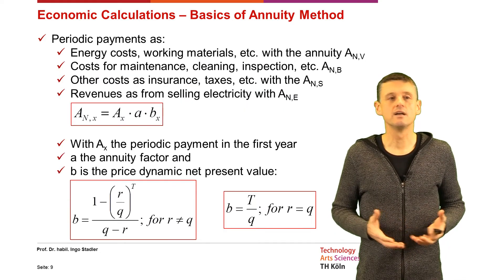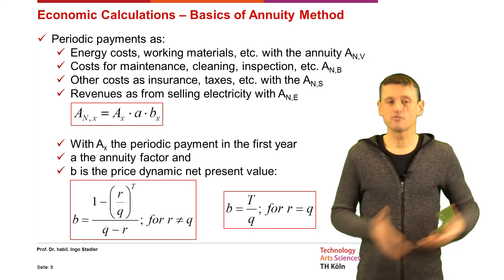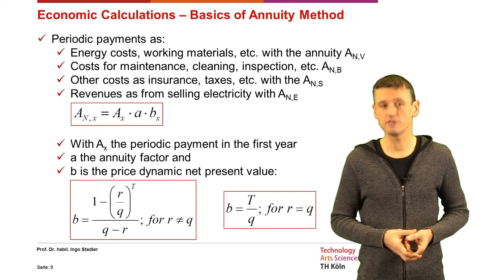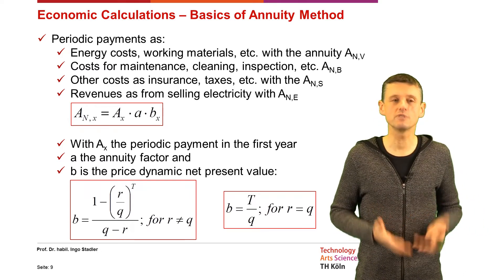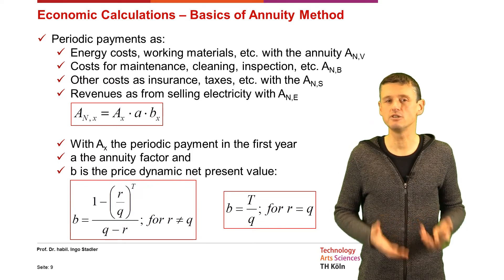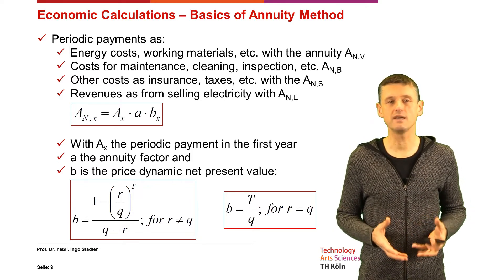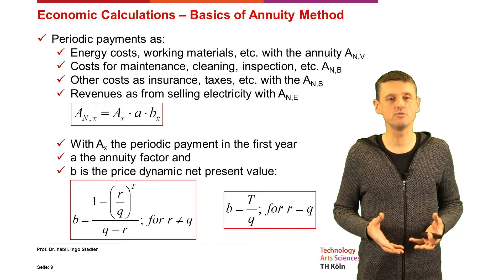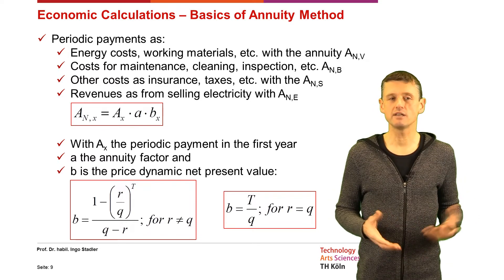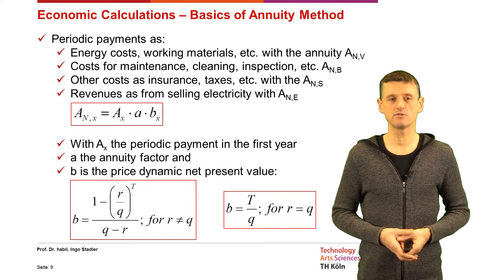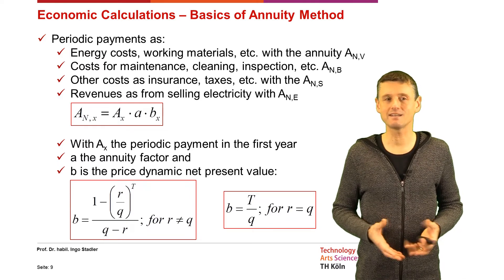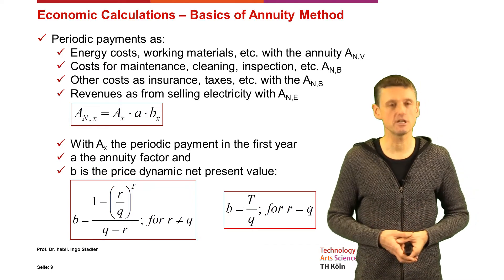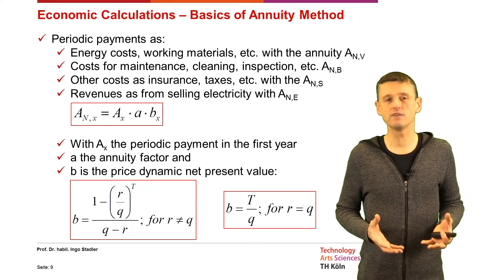Apart from initial investment costs, we have periodic payments every year: energy costs and working materials expressed as annuity ANV; costs for maintenance, cleaning, and inspection expressed as annuity ANB; other costs like insurances and taxes expressed as ANS. Sometimes we also get revenues — for example when selling electricity upon discharging a storage — expressed as ANE.